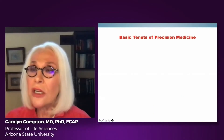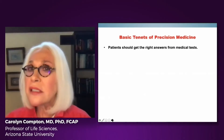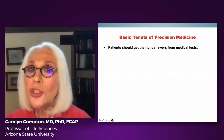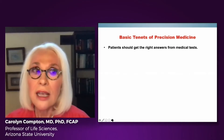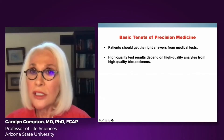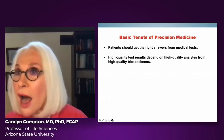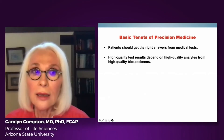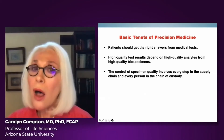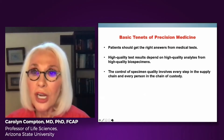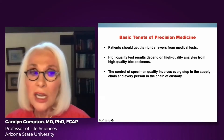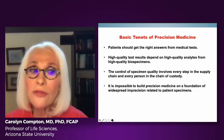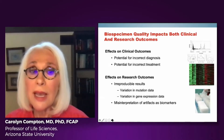I start this lecture by reviewing some of the basic tenets of precision medicine. Number one: patients should get the right answers from medical tests. High-quality test results depend on high-quality analytes from high-quality specimens. The basis for what we do is quality. The control of specimen quality involves every step in the supply chain and every person in the chain of custody. It is impossible to build precision medicine on a foundation of widespread imprecision related to patient specimens.